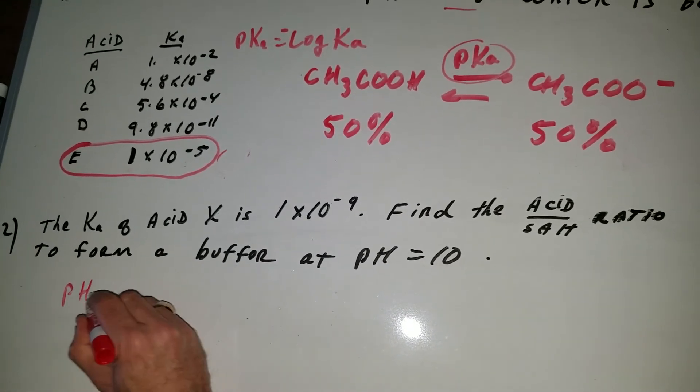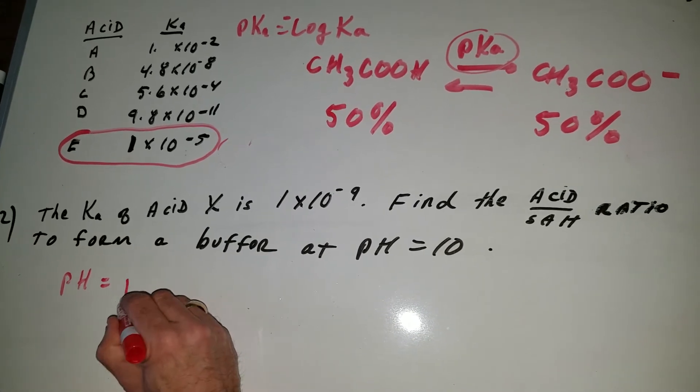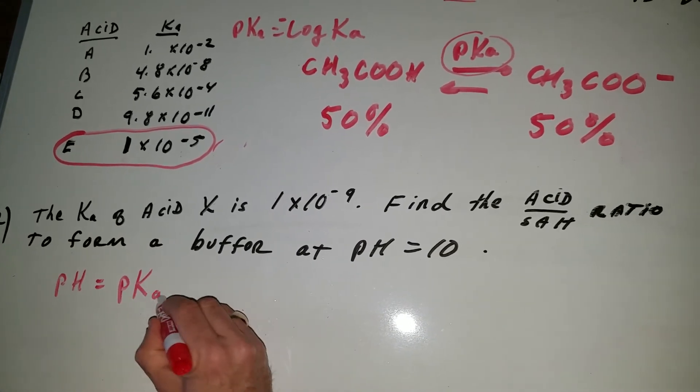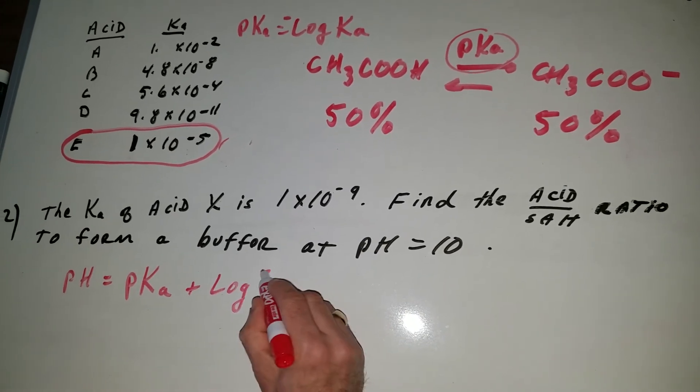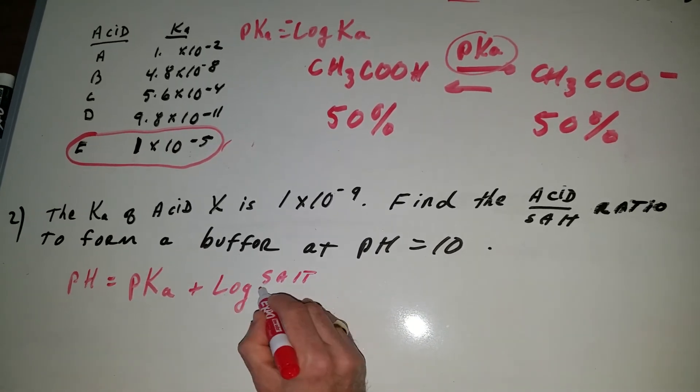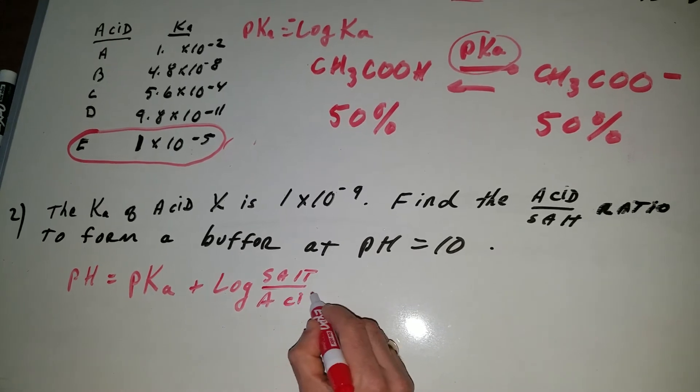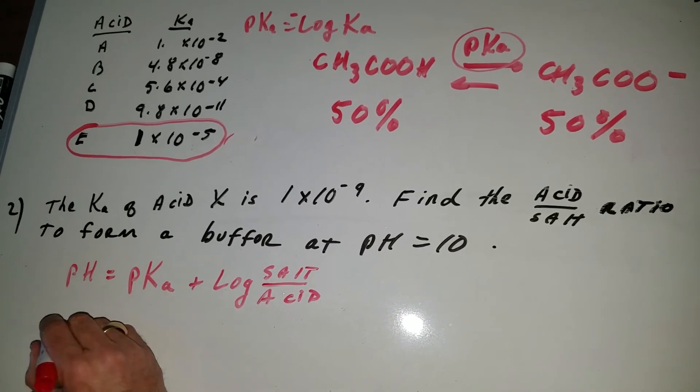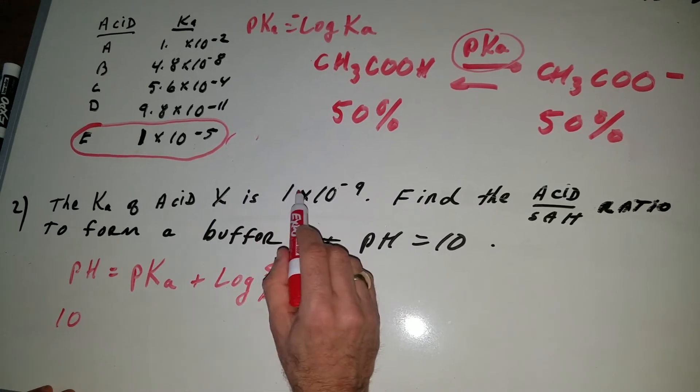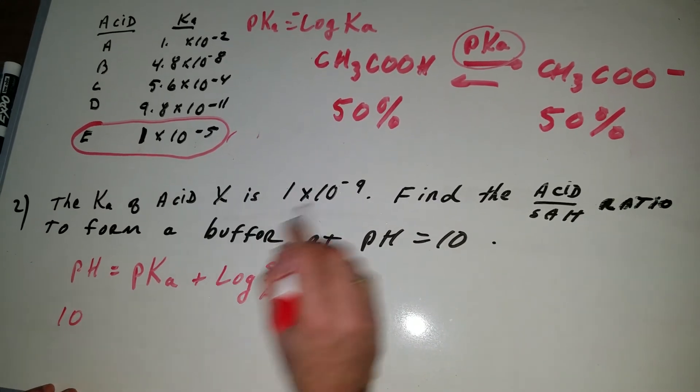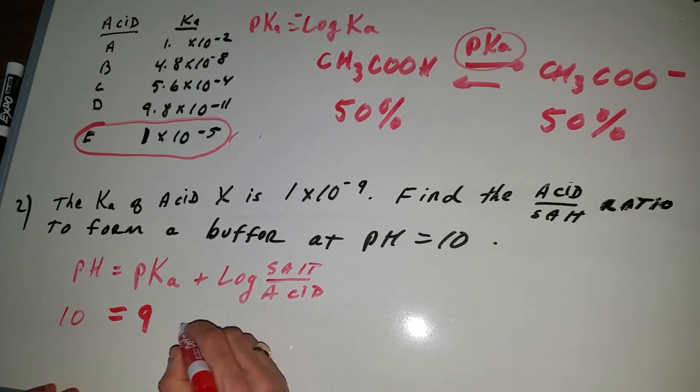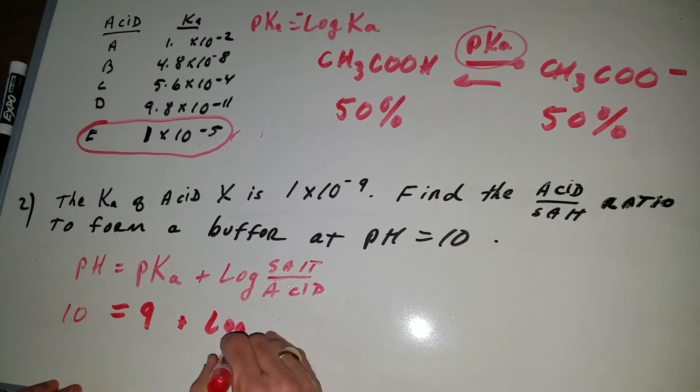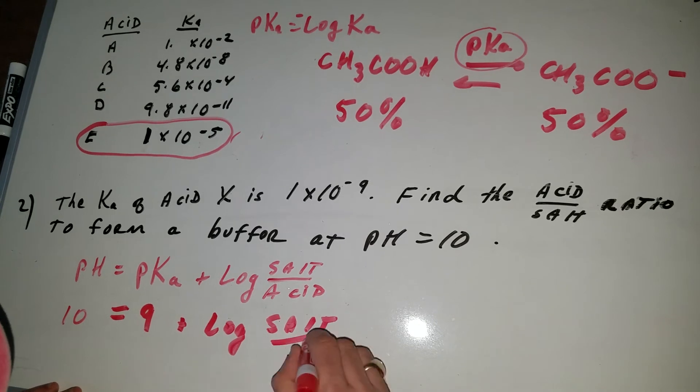The first thing you do is to write what we call the Henderson-Hasselbalch equation which says pH equals pKa plus the log of the salt over the acid. Now plug the numbers in. pH is equal to 10. pKa minus the log of 1 times 10 to the minus 9 gives me 9. So we put that in plus the log of the salt over the acid.